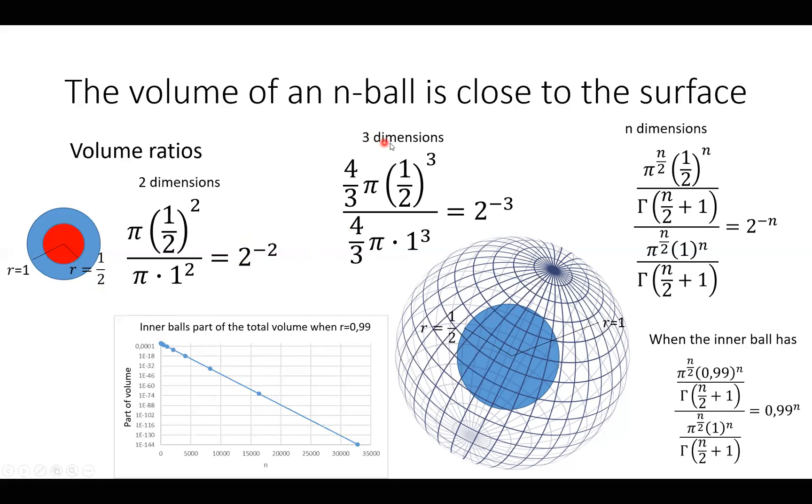If we go to three dimensions, we see we have the volume of the inner ball divided by the volume of the outer ball. And you see that the ratio is 1/8. Most of the volume is in the outer part of the ball.